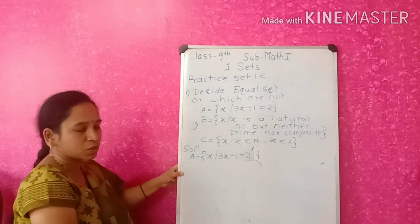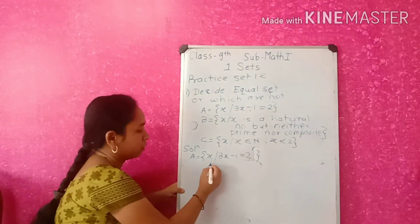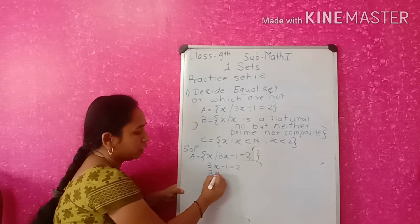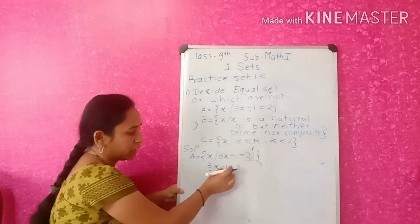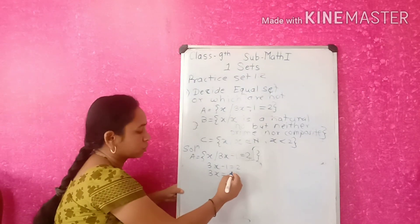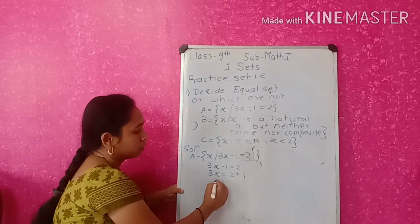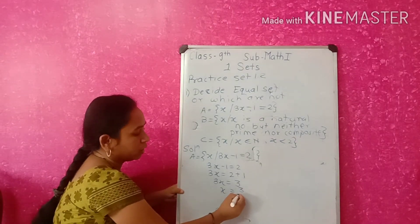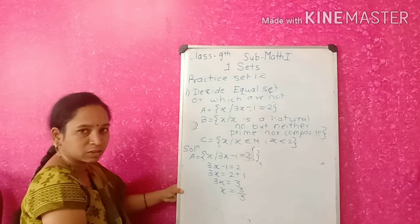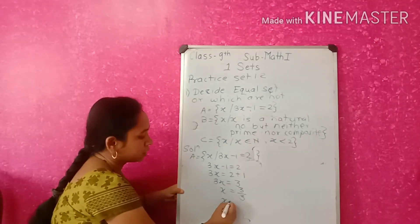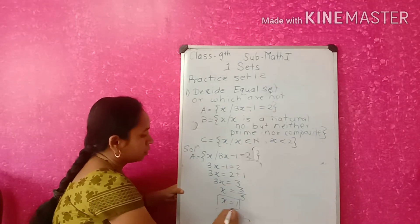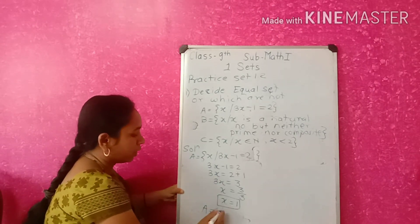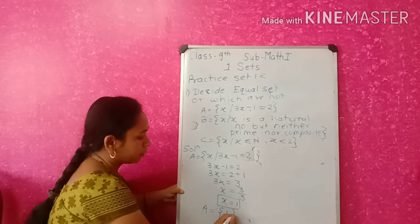For set A, the equation is 3x minus 1 equals 2. They have not given x directly, so we solve it: bring minus 1 to the other side to get 3x equals 2 plus 1, which is 3. So x equals 3 divided by 3, which equals 1. Therefore set A contains only the element 1.